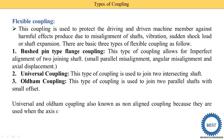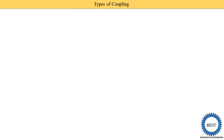Universal and Oldham couplings are also known as non-aligned couplings because they are used when the axes of two shafts are not coaxial — meaning they are not on the same line but are at certain angles or have certain offsets.